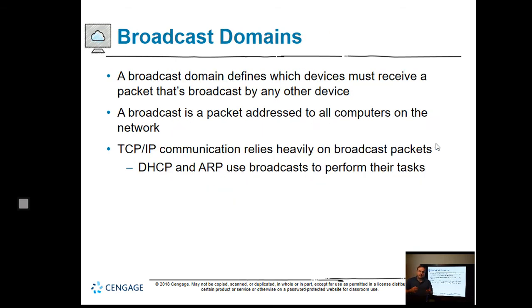Broadcast domains define which devices must receive a packet broadcast by another device. When your computer connects to a network switch along with a server, your computer sends out a broadcast packet saying 'where is server A?' — polling each device. Finally, server A replies back. Then the network switch memorizes that information, so the next time you need server A you don't have to broadcast again, because broadcast traffic slows everything down.